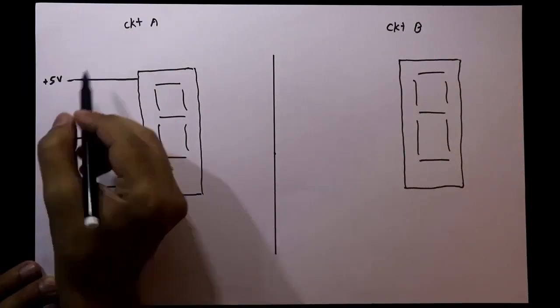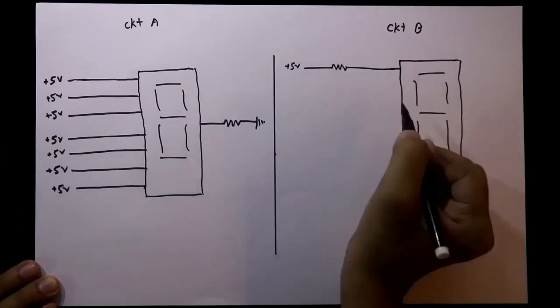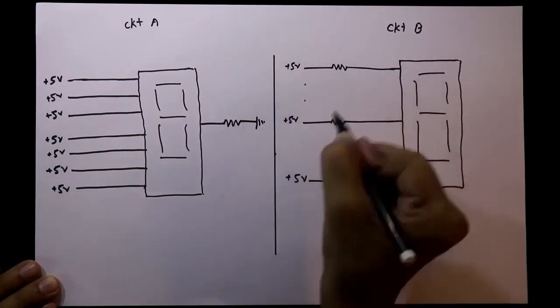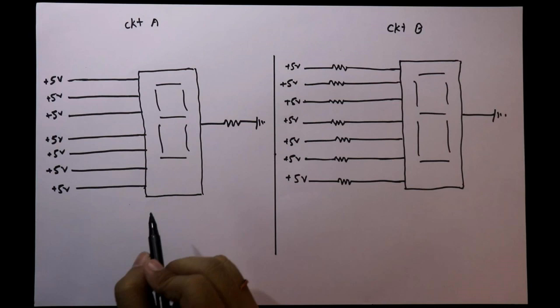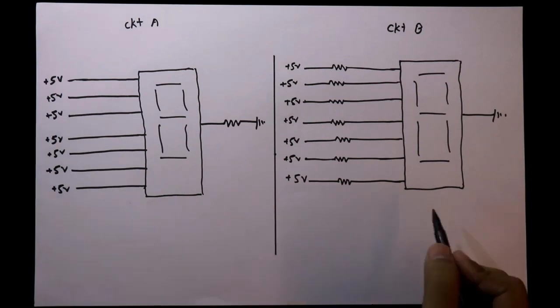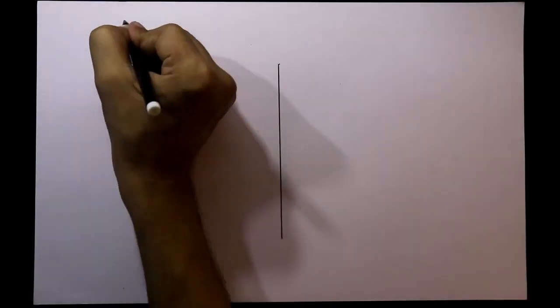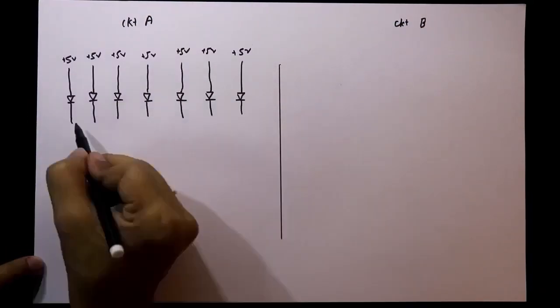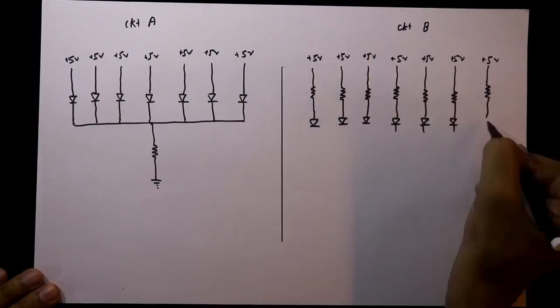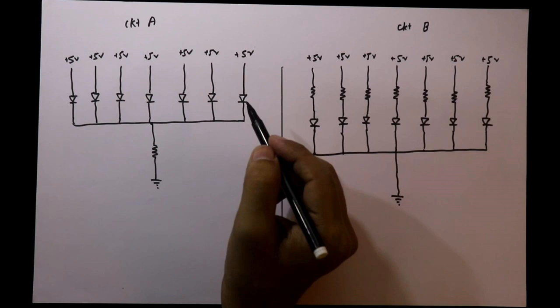I'll draw two types of circuit. Both circuit types have seven inputs; the input level is plus 5 volts. In this type of circuit we are using one resistor to limit the current, and in this type of circuit we use seven resistors to limit the current. We know that a seven-segment display is a combination of seven LEDs.